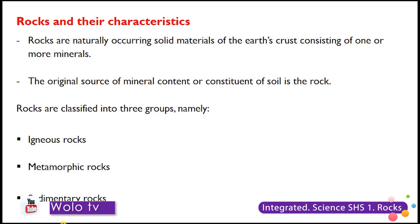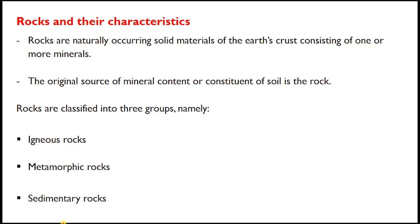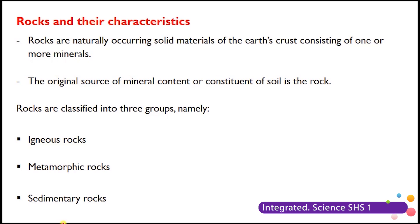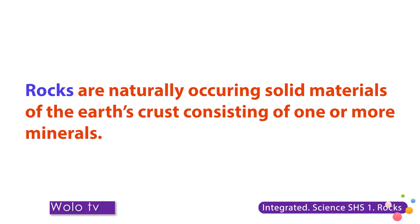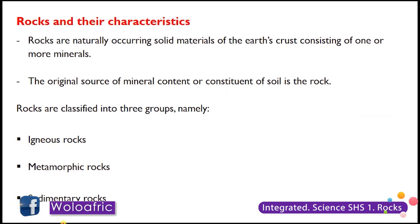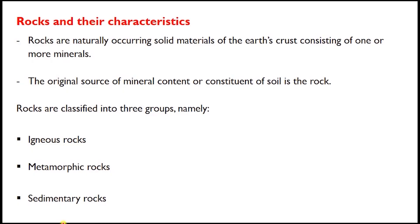Let us now look at some background information about rocks. When we say rocks we are referring to naturally occurring solid materials of the earth's crust consisting of one or more minerals. A rock must necessarily consist of one or more minerals found in the earth's crust. The original source of mineral content for the soils that we see around us is the rock, because when rocks weather they release these minerals into the soils that they form.